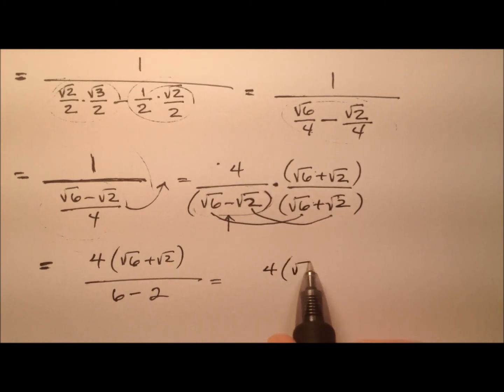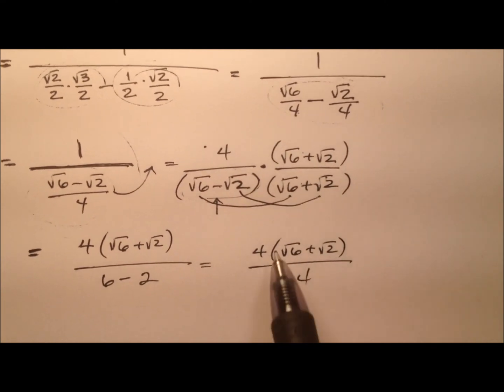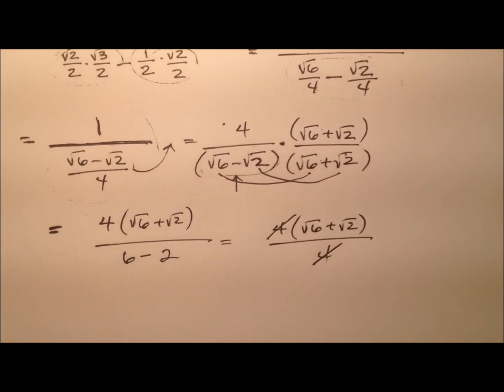So we have 4 times (√6 + √2) over 4. Those 4s cancel.